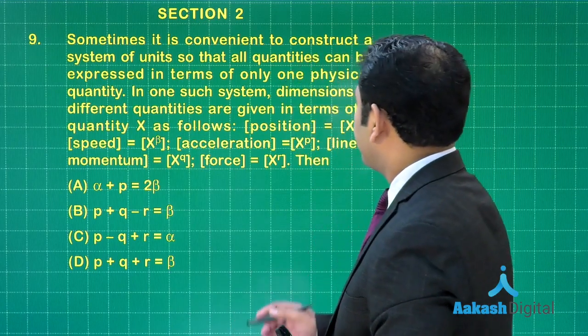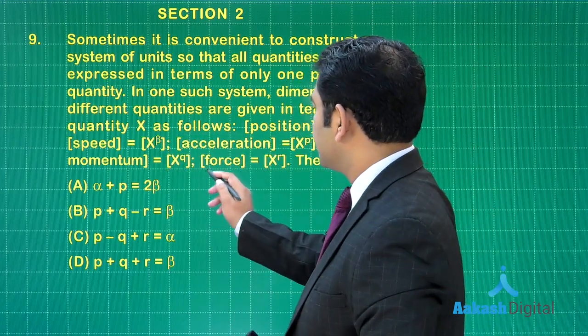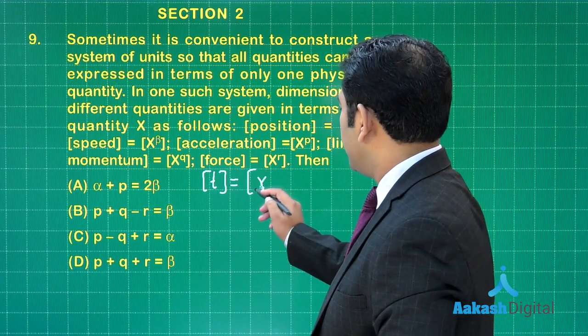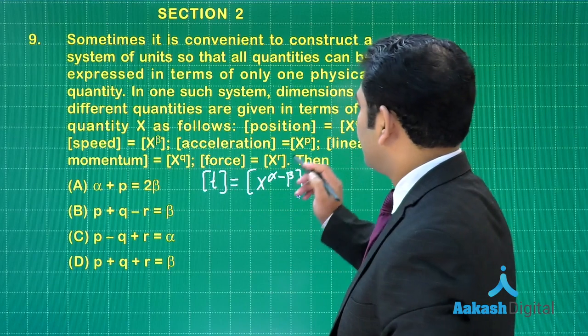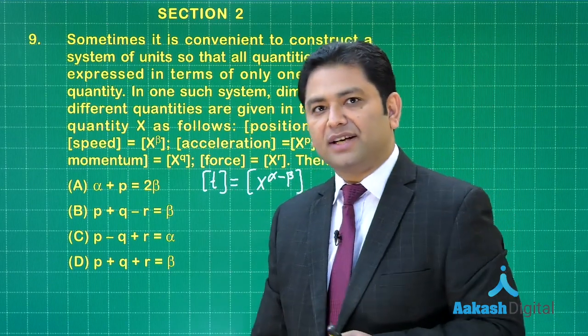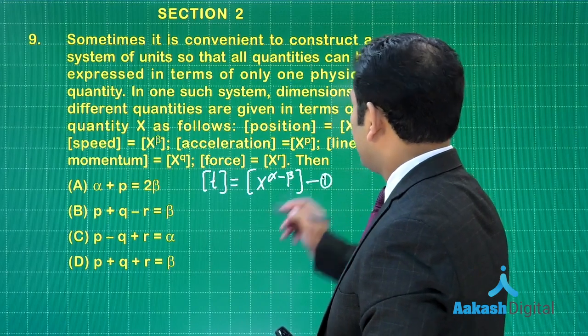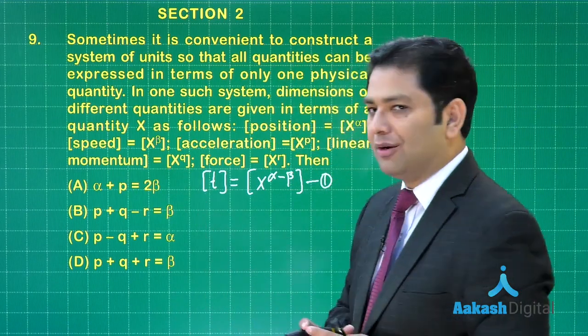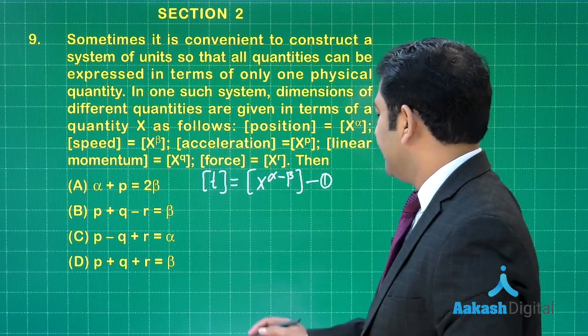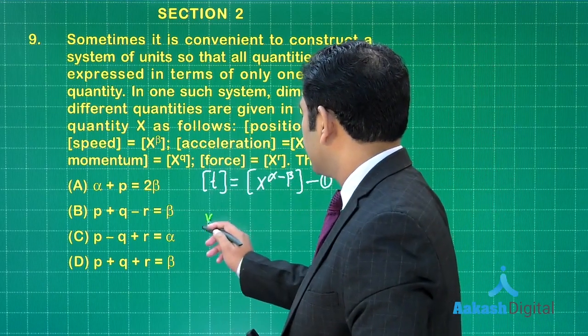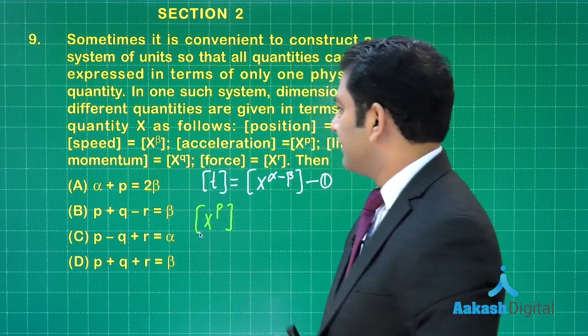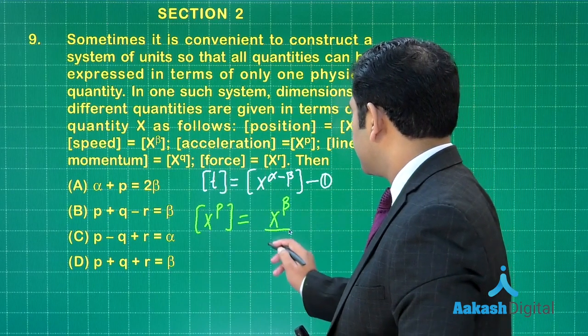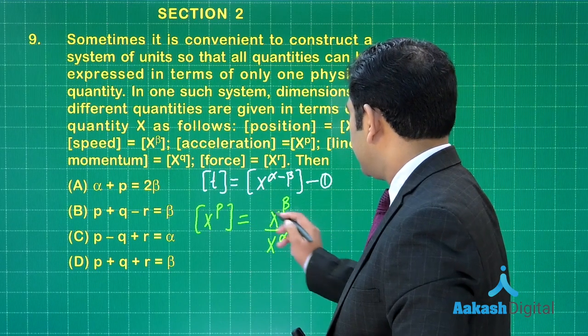Let us start. First thing, position is given, speed is given, so I can write the dimension of time as position by speed, so x raised to the power α minus β. This is straightforward, time writing as position divided by speed. Let us call this equation number one. Now to go further to relate p, q, r, β and α, I will relate acceleration with speed. The value of acceleration, which is x raised to the power p, will be speed which is x raised to the power β by time which is x raised to the power α minus β. That is another computation that we may suggest.